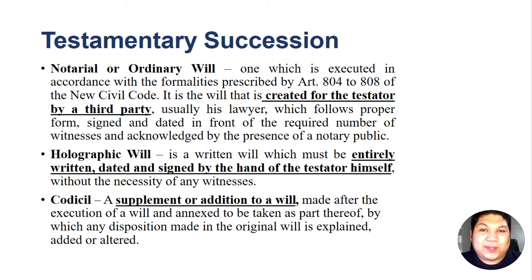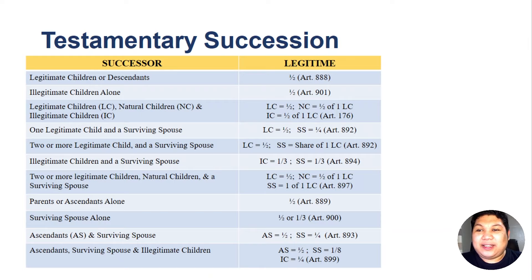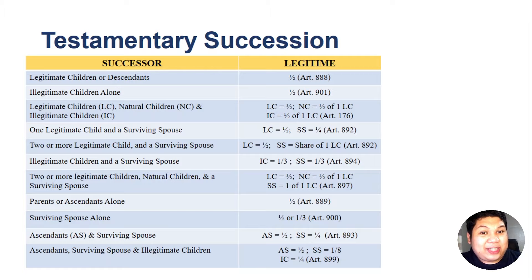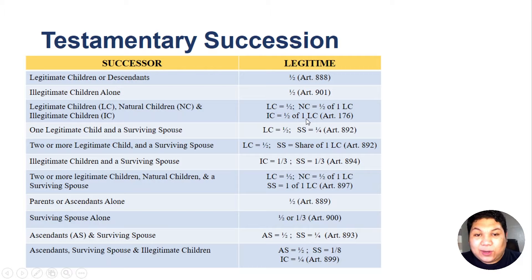Now let's look at how much the compulsory heirs receive. If there are only legitimate children or descendants, they share one half — their legitim is one half of the entire estate. If there are only illegitimate children alone, they also inherit one half. When there are legitimate children, natural children, and illegitimate children together, the legitimate children share one half of the entire estate, while each natural or illegitimate child receives only one half of the share of one legitimate child.